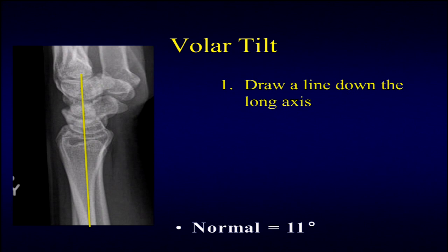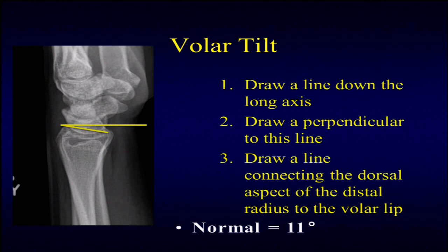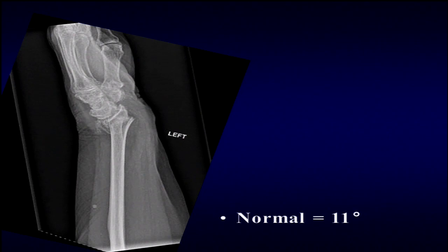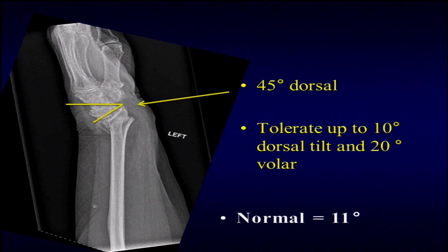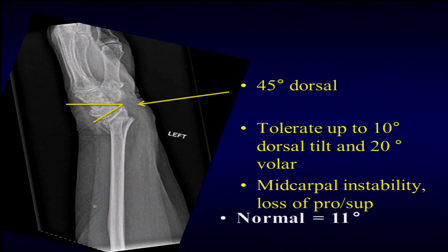For volar tilt, you draw a line down the long axis, a line perpendicular to that, and then measure your volar tilt. In most patients the standard is 11 degrees, though this is hotly debated in terms of how much you can accept. In this patient, drawing those same lines, we see about 45 degrees of dorsal tilt. Common guidelines are about 10 degrees of dorsal tilt and 20 degrees of volar tilt as limits; above those, patients start to develop mid-carpal instability as they break through the mid-carpal joint rather than bending through the wrist.